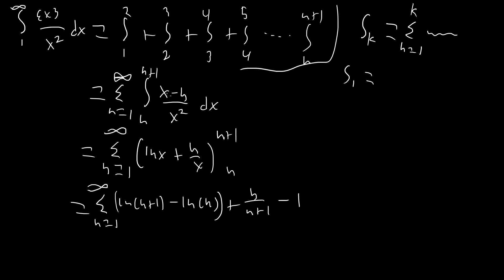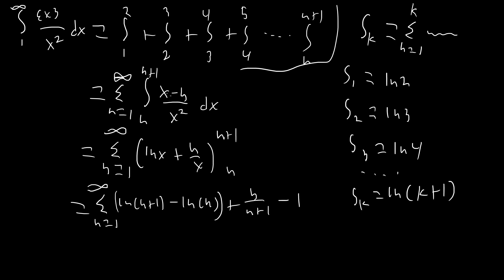Writing s1: since ln 1 is 0, that's just ln 2. Writing s2: that's s1 plus the second term ln 3 minus ln 2, so we subtract out ln 2 and end up with ln 3. S3 similarly gives ln 4. So sk overall equals ln(k+1) — this sum is a telescoping series where each term subtracts part of the last term. As k goes to infinity, ln(k+1) goes to infinity, but we'll see it remedies itself quickly.